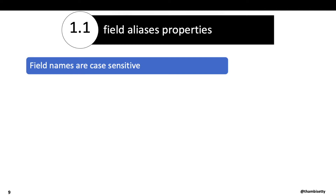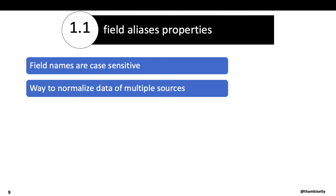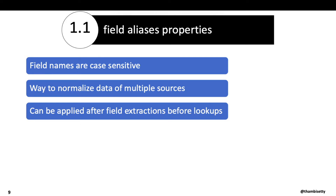Field names are case sensitive. For example, 'User' starting with uppercase U and 'user' starting with lowercase u are not the same. Another example: if U and N are uppercase on the left side and all lowercase on the right side, they are different fields. Field aliases are a way to normalize fields across multiple sources — you can make a user field common across all sources. Field aliases can be applied after field extractions and before applying automatic lookups.